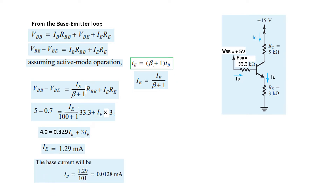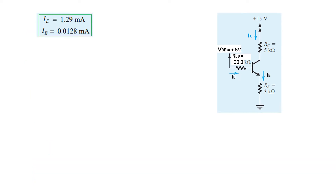We then calculate IB using the formula IB = IE divided by (β+1): 1.29 divided by 101 gives IB equal to 0.0128 milliamperes.